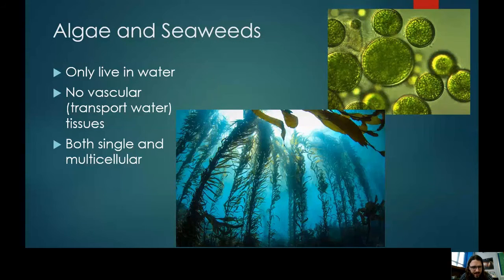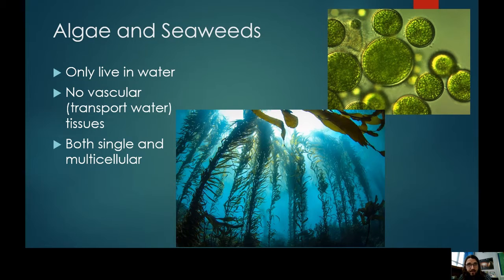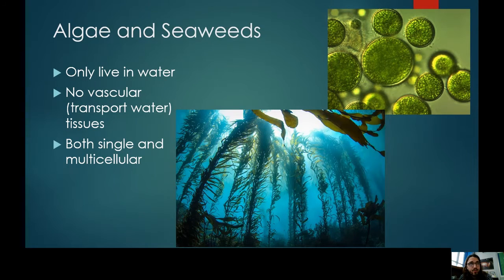Seaweed is a plant — it's pretty big, so it has many cells and is multicellular. But some algae can also be single-celled. Most single-celled algae are still considered plants even though they can be microscopic, with the exception of blue-green algae, which is actually a cyanobacteria. The scummy stuff you see in a pond or pool — that is technically a microscopic plant.